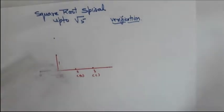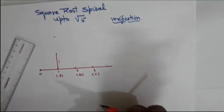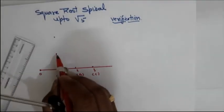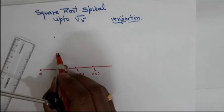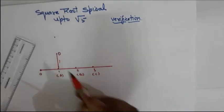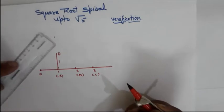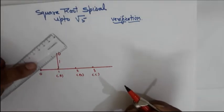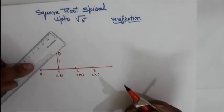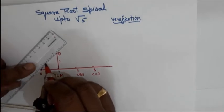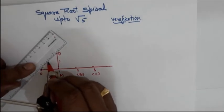Let this new point be D. You have already named points A, B, C. So this perpendicular endpoint is D. Then with a dot line, join O to D.